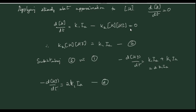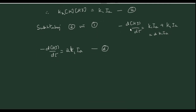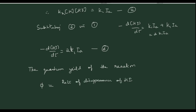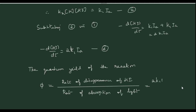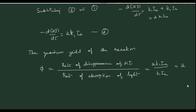We can now write the expression for quantum yield. Quantum yield φ = rate of disappearance of HI divided by rate of absorption of light. The rate of disappearance of HI is 2 × K1 × Ia and the rate of absorption of light is K1 × Ia. So φ = 2. However, in this case, φ decreases as the reaction proceeds.